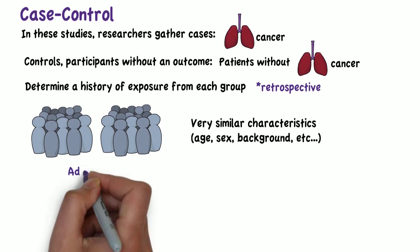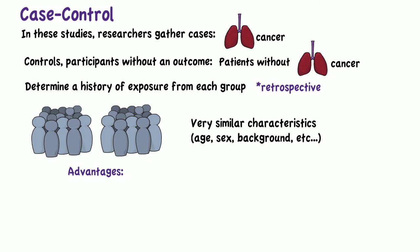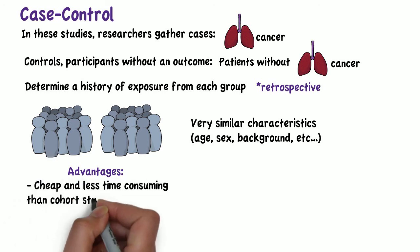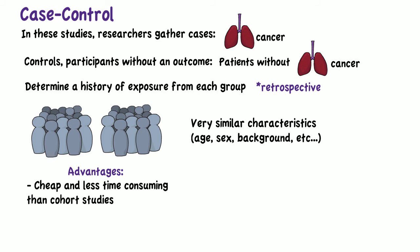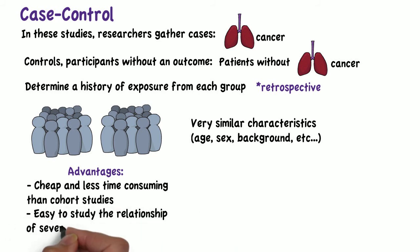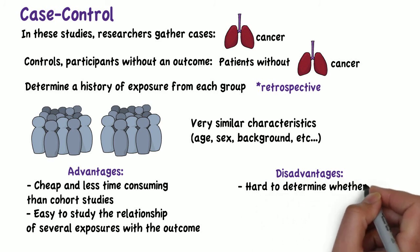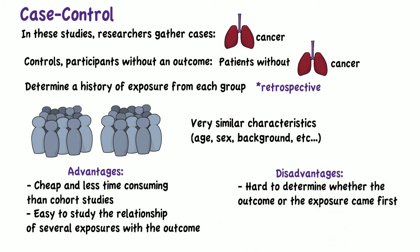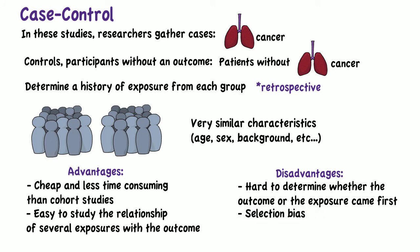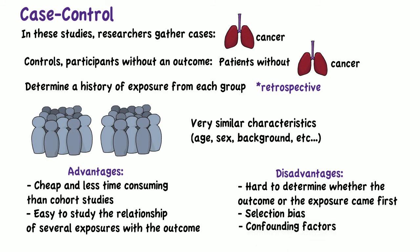The advantages of case control studies are that they are often cheap and less time-consuming than cohort studies, and it is easy to study the relationship of several exposures with the outcome. The disadvantages are that it is often hard to determine whether the outcome or the exposure occurred first, there may be bias in selecting cases and controls, there may be unaccounted confounding factors, and the determination of exposure relies on memory or existing records, both of which may contain inaccurate data.